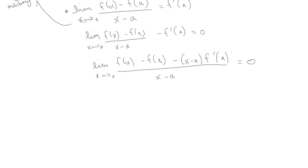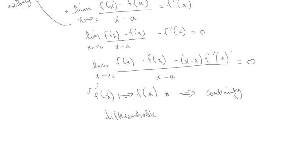What this represents is that f of x is getting closer and closer to f of a. If this fact is true, then we know the function value exists, the limit exists, and the limit equals the function value. So using this logic, the differentiability of f of x at x equals a implies its continuity. If a function is differentiable at a point a, that reflects that continuity is maintained at that point.